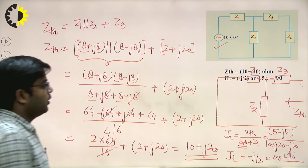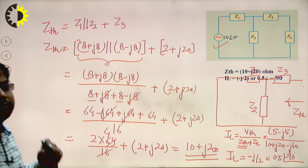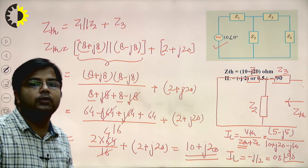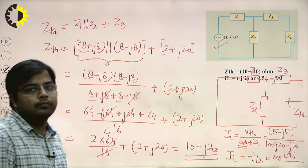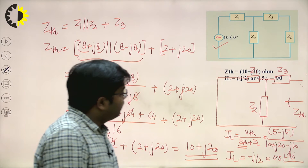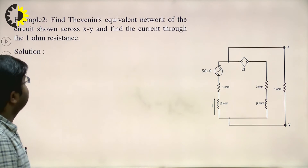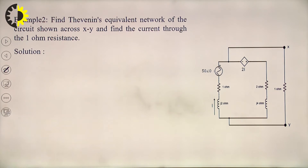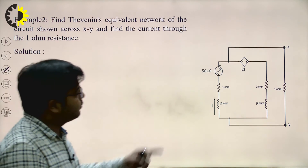This is how you find the current through load impedance using Thevenin's theorem. Let us see another example — example number 2. Find the Thevenin's equivalent network of the circuit across terminal XY, then find the current through the 1 ohm resistor.